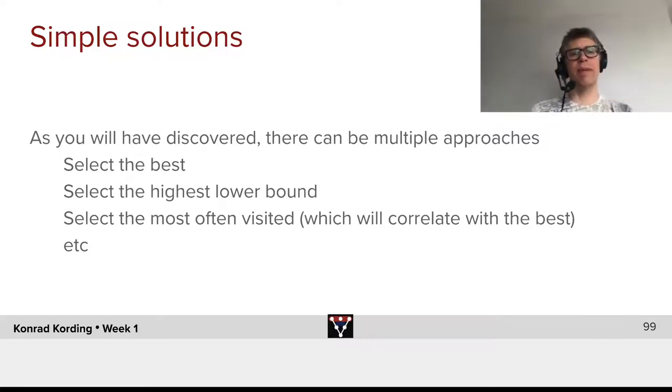There are a number of simple solutions that we can think of. As you have discovered, there can be multiple approaches. One is we can simply select the best move, the one with the highest Q. One issue there might be that it might be relatively unstable, like it could be a move that we selected a very small number of times.